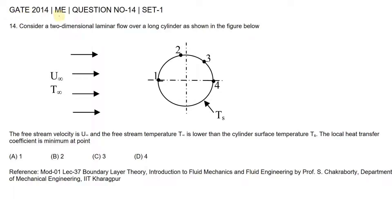This question is from GATE Mechanical Engineering of 2014. This is question number 14 of set 1. The question is: consider a two-dimensional laminar flow over a long cylinder as shown in the figure below. The free stream velocity is U infinity and the free stream temperature T infinity is lower than the cylinder surface temperature T_s.